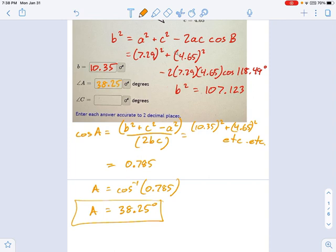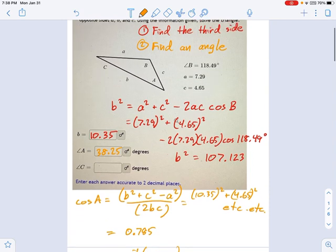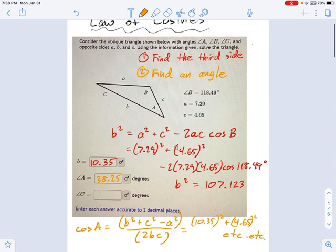We have 38.25 degrees. If you want, you can find angle C in the same method by doing cosine of C equals, you know, big ugly fraction, solve it all. But at this point, I would just go ahead and do 180 degrees minus the other two angles. That'll give you angle C. That's the quickest way to approach it.